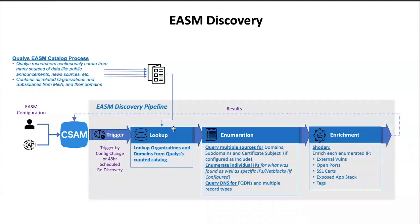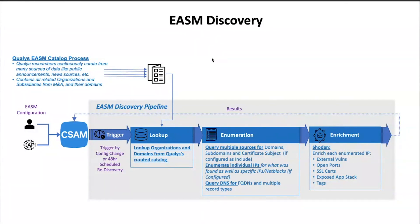It's going to go through and look up your organization, pull back M&A activity, enumerate all the IP addresses that we can find based upon WHOIS and different queries, and then enrich it with the data that we can get out of Shodan and some of the other pieces of information we pull out of the cloud providers, and it builds into this report.